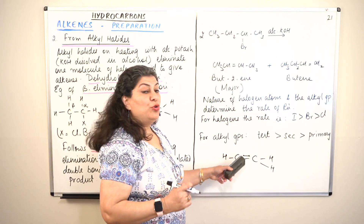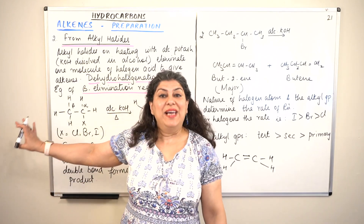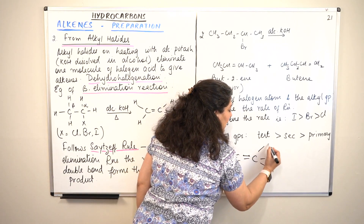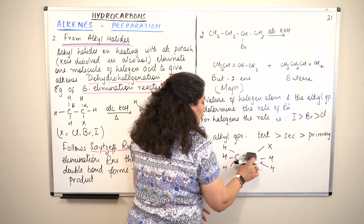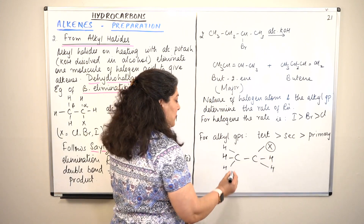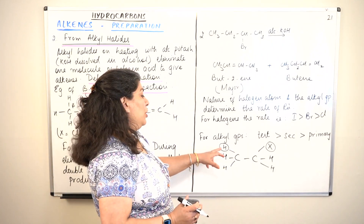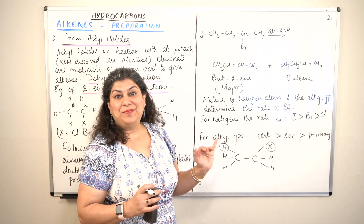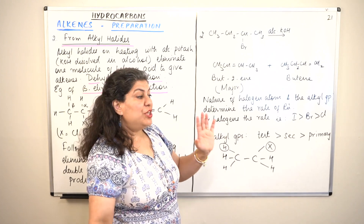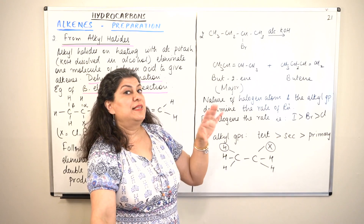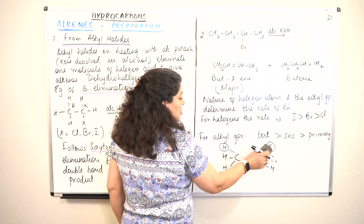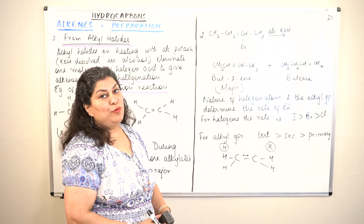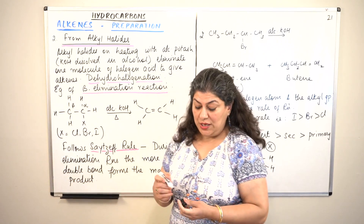When preparing alkenes from alkyl halides, one carbon has a halogen atom and the adjacent carbon has a hydrogen. What is lost is a halogen atom from one carbon and a hydrogen atom from the other. For example, if the halogen is chlorine, HCl is removed; if bromine, HBr is removed. The halogen acid is eliminated, the two bonds break, and the two carbons share their electrons to form the alkene.